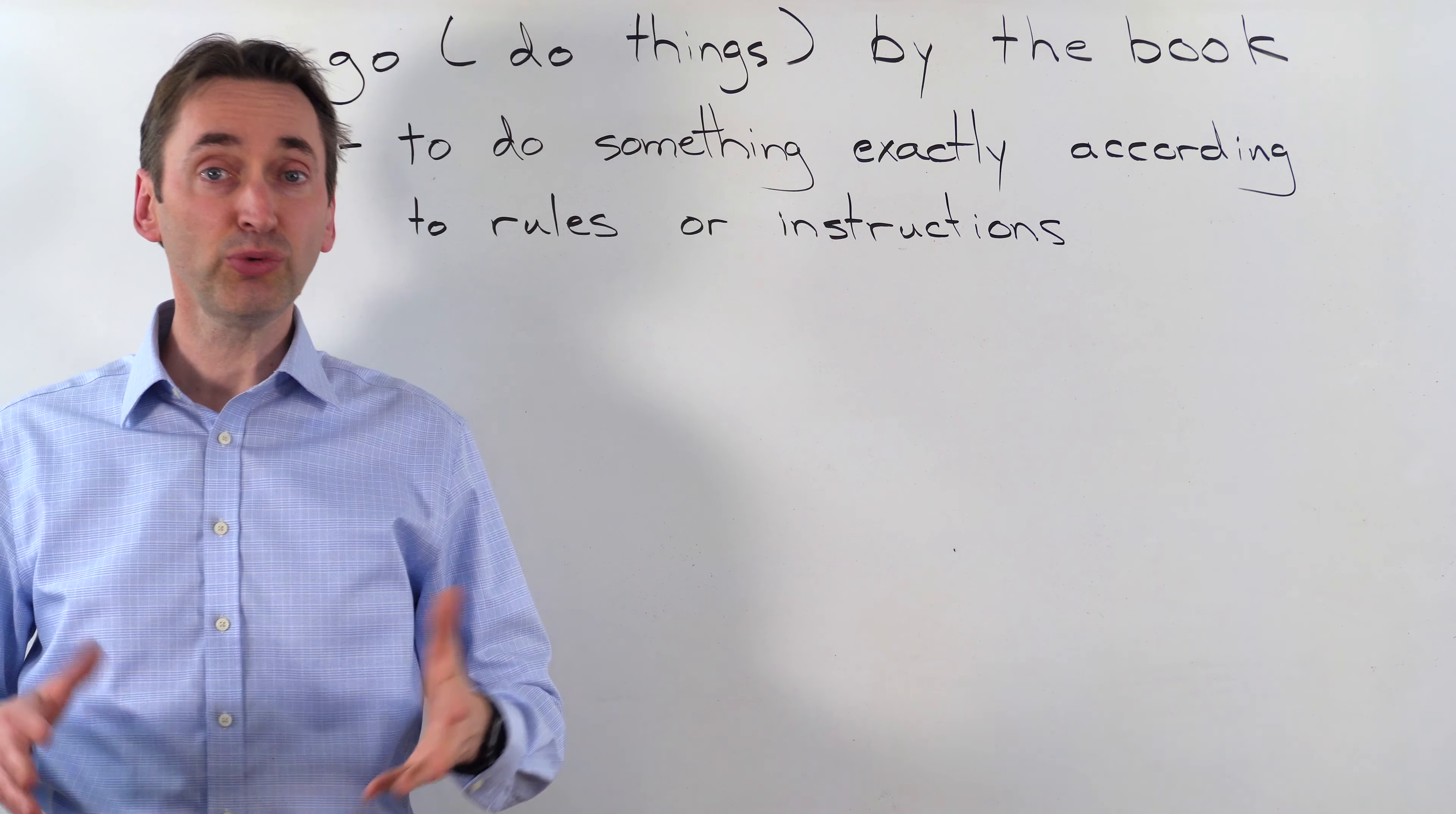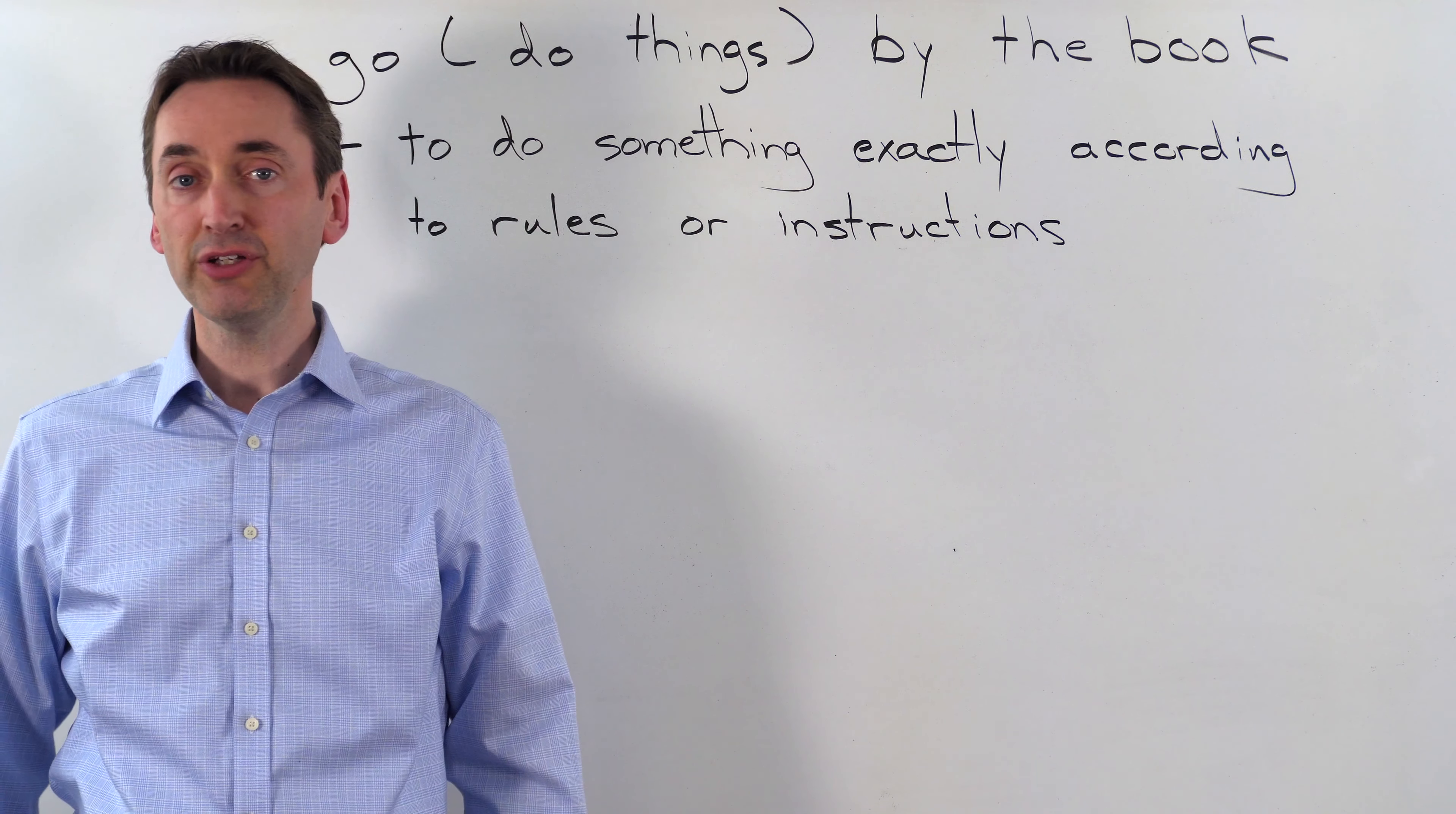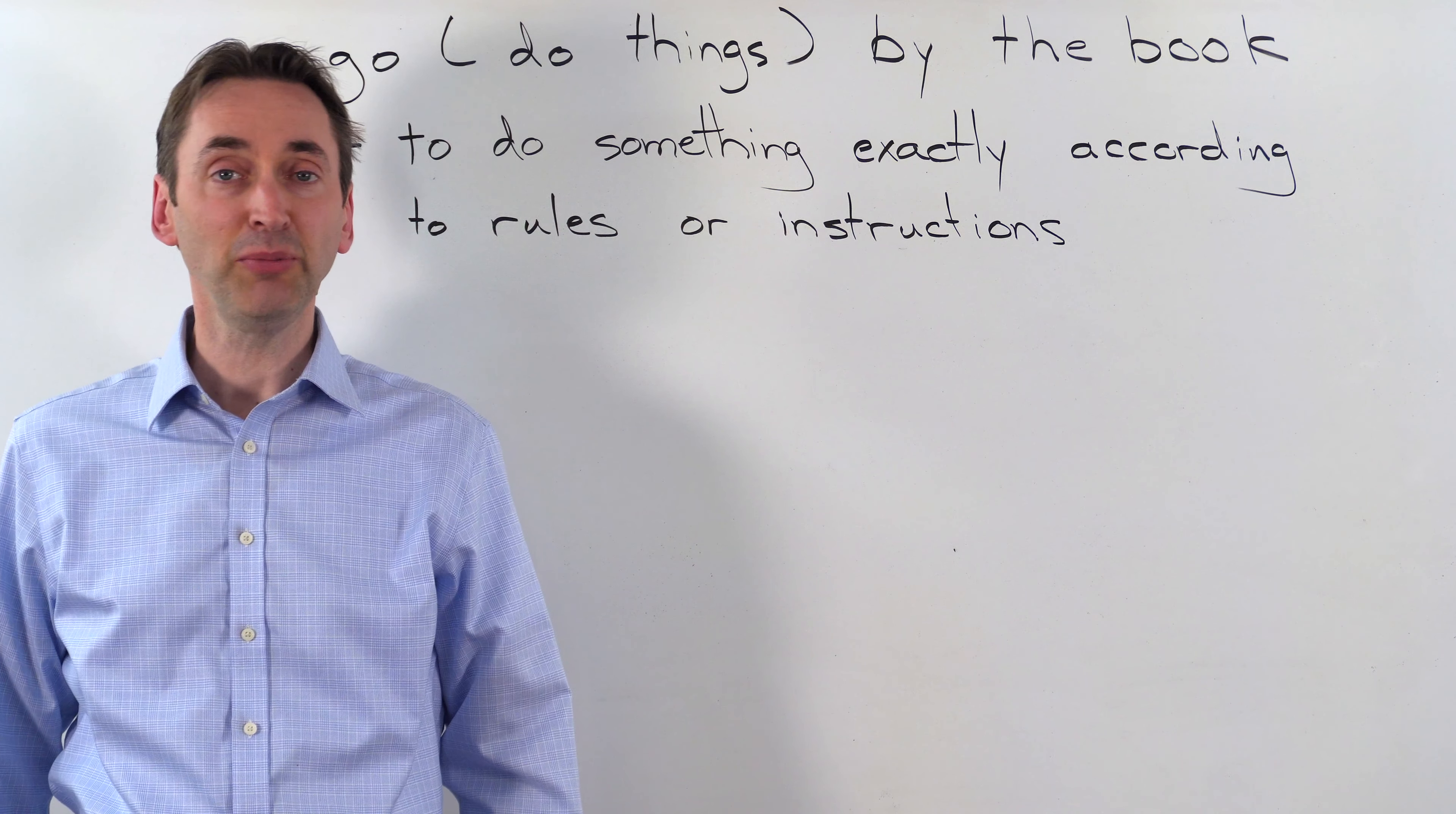You follow the rules exactly is the meaning of go by the rules or do things by the rules. Go by the rules or do things by the rules は、日本語で言うと、規則通りにやる、慣例に従うという意味です。